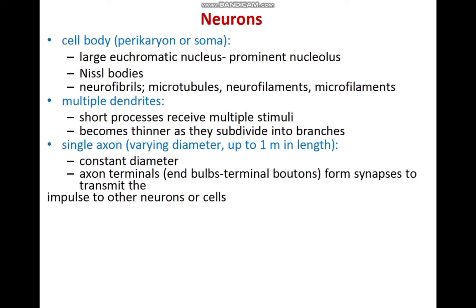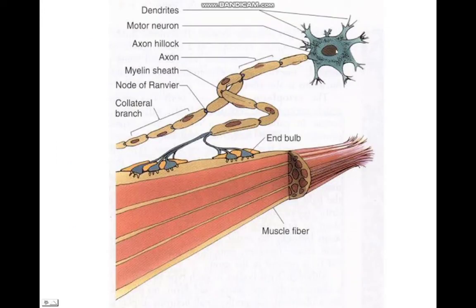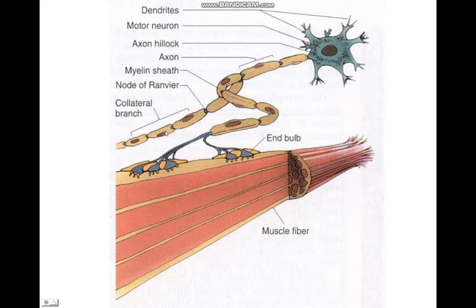The neuron is a very specialized cell consisting of three components: the nerve cell body (soma), the dendrites — which are cytoplasmic extensions around the nerve cell body in the form of a tree — and the axon, a very long cylindrical process of uniform diameter that runs downwards and ends at a swollen terminal.